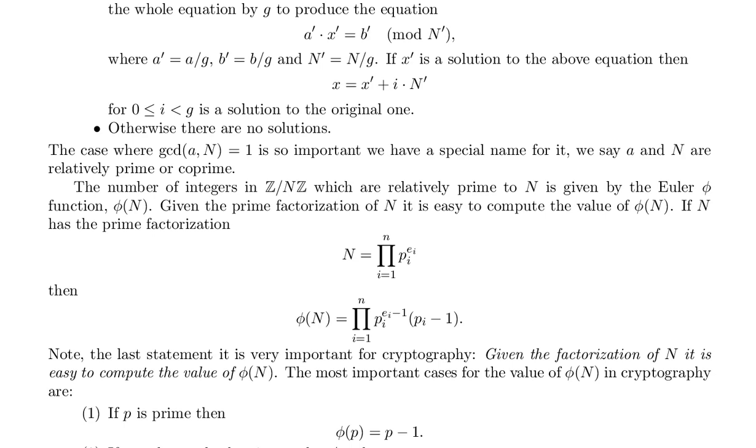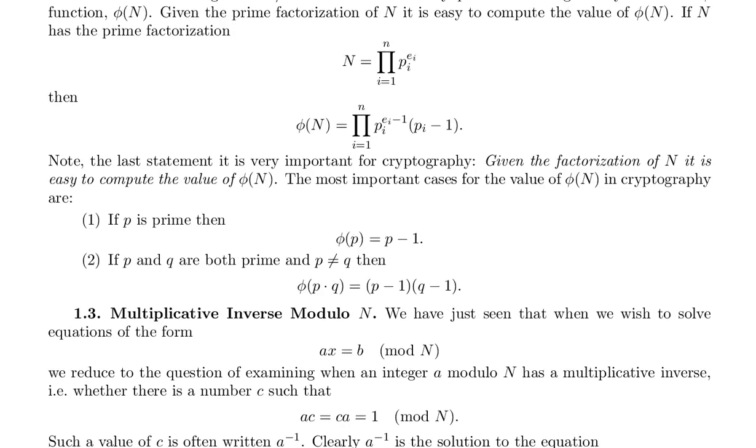The most important cases for the value of phi of n in cryptography are: One, if p is prime, then phi of p equals p minus 1.